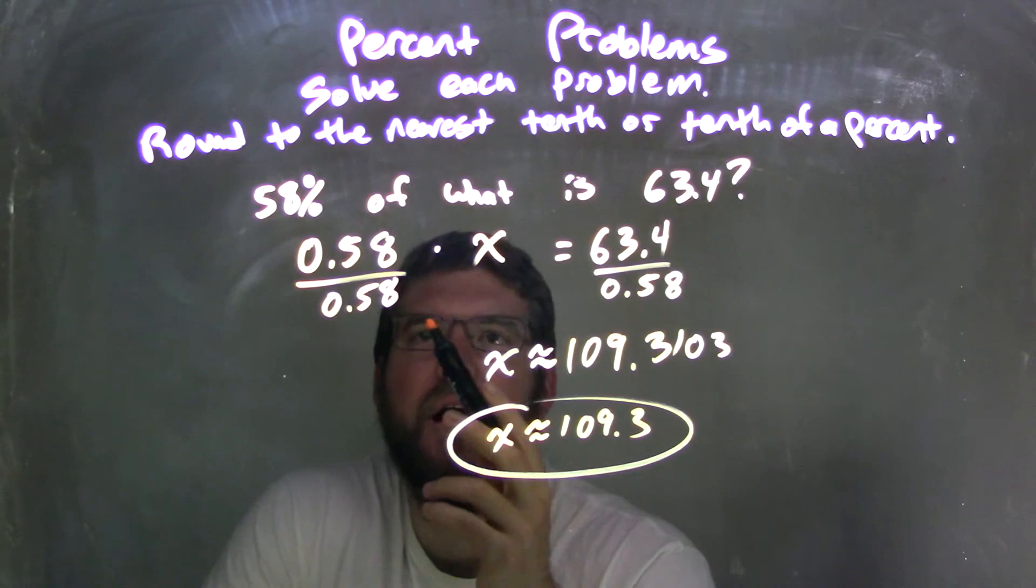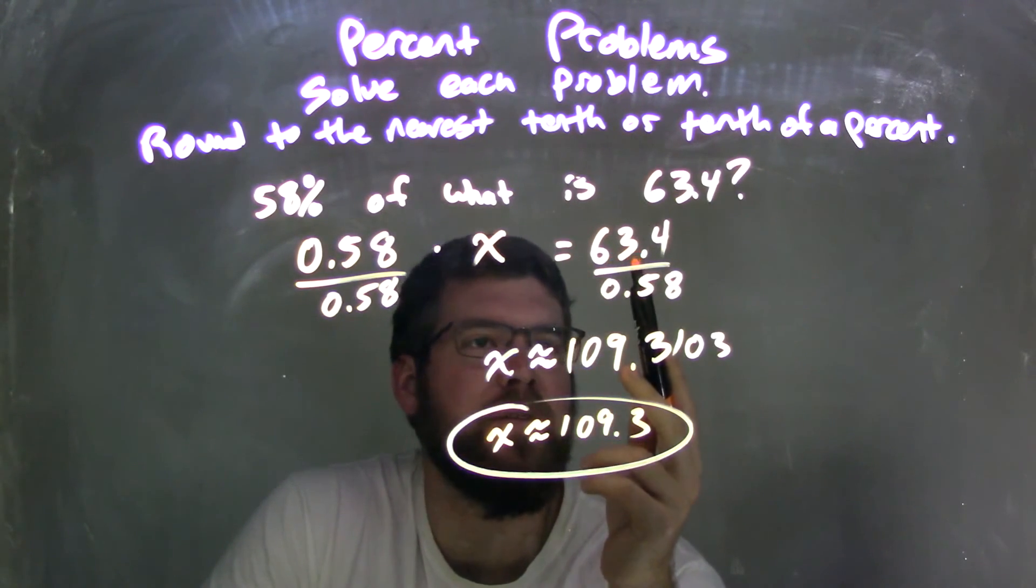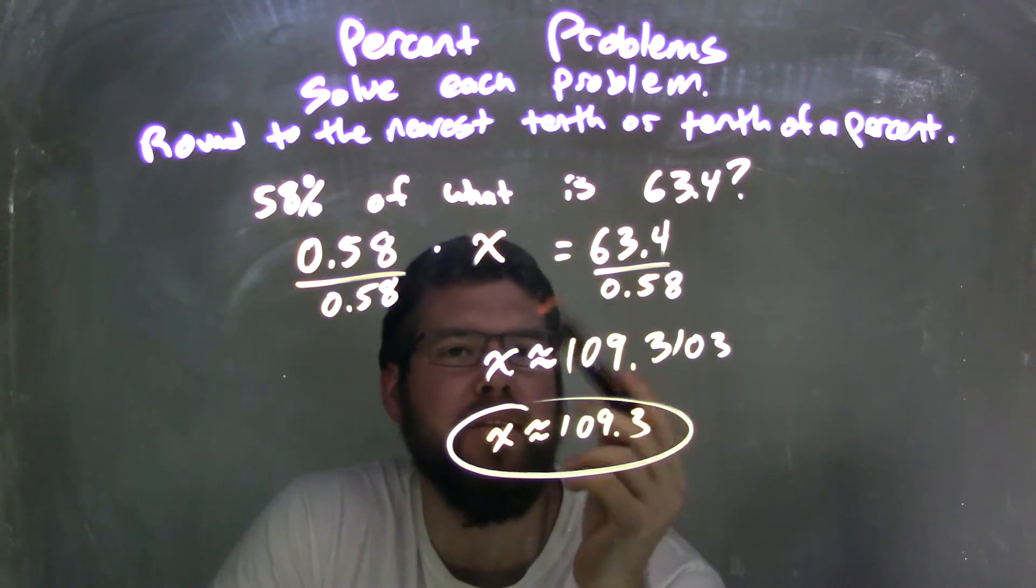There's another way to do it. In some of my problems, I don't make the equation. So 0.58 times x is 63.4, equal sign. And then divide by 0.58 on both sides, leaving me x by itself.